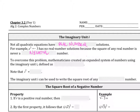To overcome this problem, mathematicians created an expanded system of numbers using the imaginary unit I, defined as I equals the square root of negative 1. If you square the square root of negative 1, you get negative 1. So know that I squared equals negative 1. The imaginary unit I can be used to write the square root of any negative number.